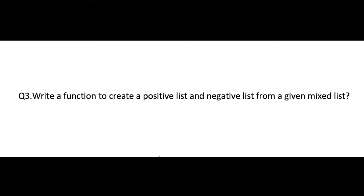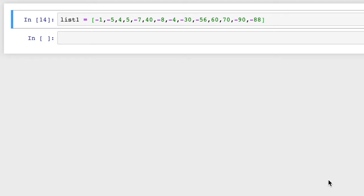Write a function to create a positive list and a negative list from a given mixed list. A list is given containing some positive and negative integers. We need to separate the positive integers into a positive list and the negative integers into a negative list. Let's try to write the function.